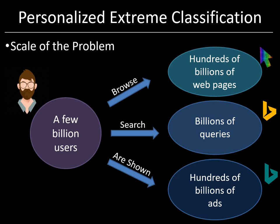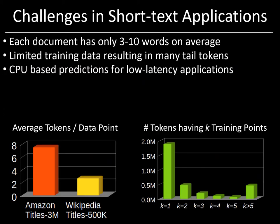Furthermore, all of this needs to be done within the ambit of GDPR so that personal data is protected and users can opt out and delete their history whenever they want to. In addition, in order to maintain privacy and meet our low latency requirements, our deep extreme classifier only has access to the web page title and not to its content, which makes personalization a prime example of a short text application.